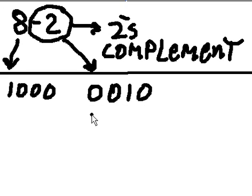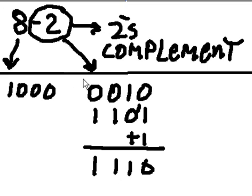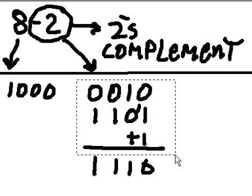Now I invert all the digits, so this is now 1, 1, 0, 1. Now I add 1 to it, plus 1, 1 and 1 is 0, carry the 1, bring that down, bring down the 1 and the 1. There's our guy. There's our representation of the number 2.